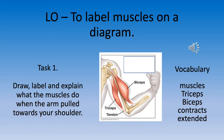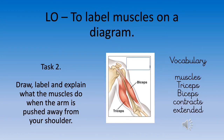Task one: draw, label and explain what the muscles do when the arm is pulled towards your shoulder. Have a look carefully at the diagram. Use vocabulary such as: muscles, triceps — which is under your arm — and biceps — which are on top of your upper arm. 'Contracts' is when your muscle bulges, and 'extends' is when your muscle stretches and flattens out.